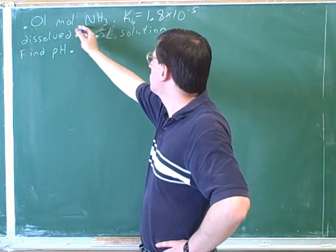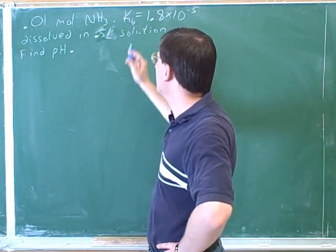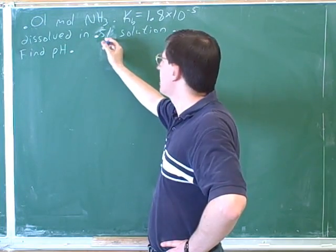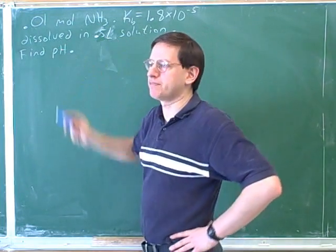All right, so we have 0.01 molar ammonium, here's the Kb. Let's say that it's in 0.5 liters of solution, and now we want to find the pH.